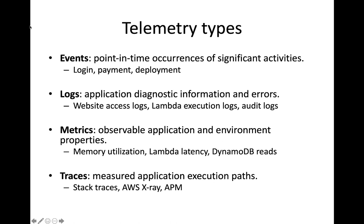And then there are metrics. These are generally the observable, numeric data that is being collected from our application and our cloud resources. These are things like memory utilization on servers or network latency. It could be things like disk IOs — number of reads and writes to a database. These are numeric values which we can oftentimes instrument in some sort of chart to identify trends over time.